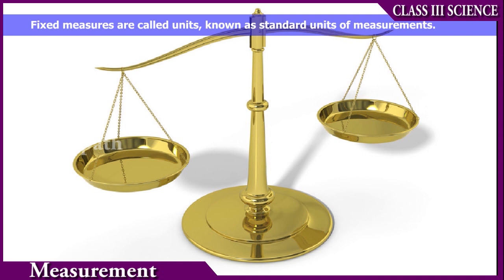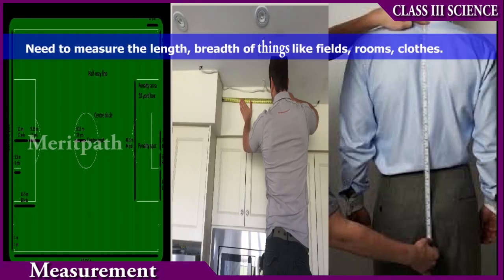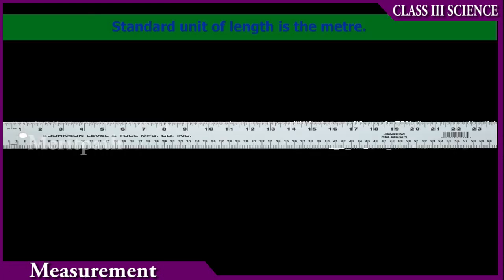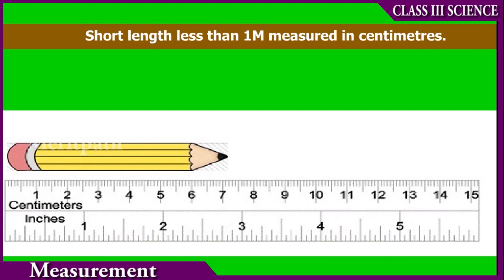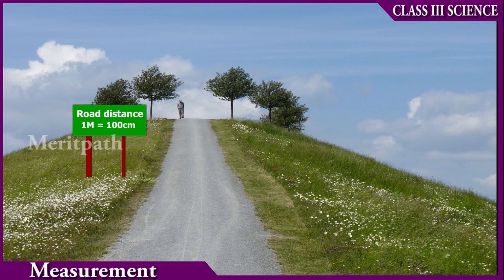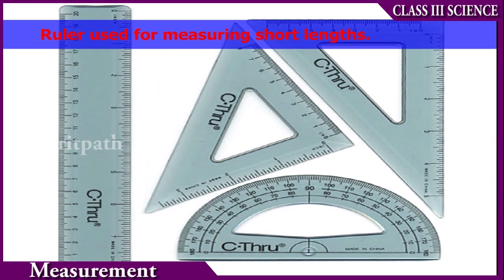Measurement of length is usually done for things like fields, rooms, clothes, etc. The standard unit of length is the meter. Long distances between two places more than a thousand meters are measured in kilometers. Short lengths less than one meter are measured in centimeters. One kilometer is equal to one thousand meters. One meter is equal to one hundred centimeters. Tapes, meter rods, and rulers are used for measuring lengths.